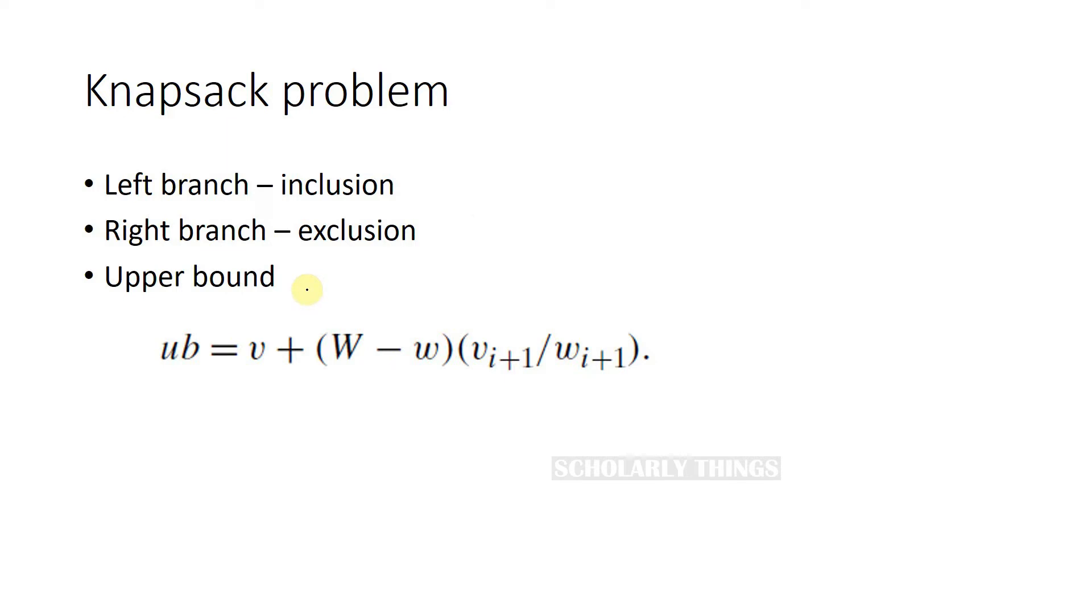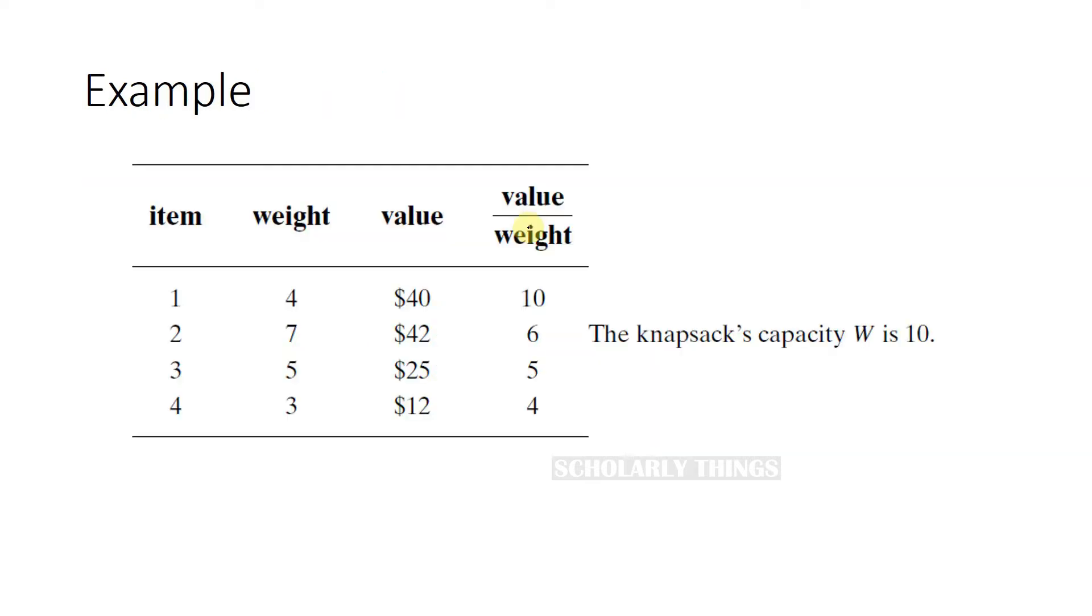Basically it is a maximization problem. Upper bound can be calculated as the sum of v, the total value of items already selected, plus the product of the remaining capacity of the knapsack, that is capital W minus small w, and best per unit payoff among the remaining items. So this is the formula to find the upper bound. Note that in the table, value by weight ratio is ordered in descending fashion.